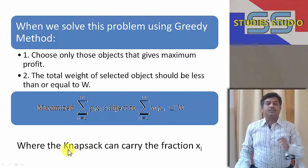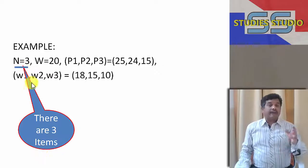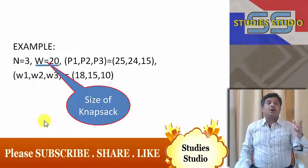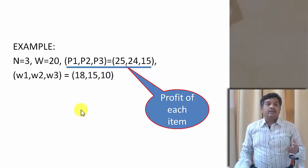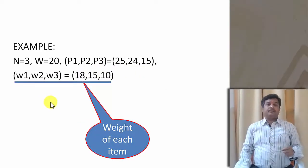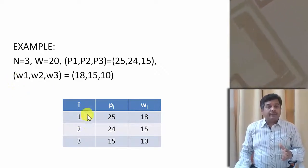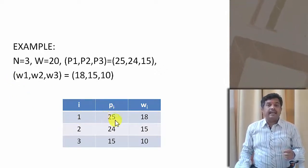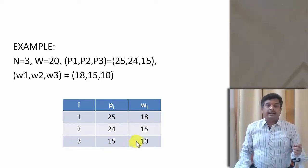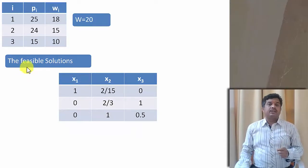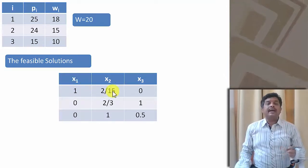Here, we can take a fraction of a particular item. Let me illustrate with an example. Let n be the number of items, W be the size or weight of the knapsack. Profits p1, p2, p3 and weights w1, w2, w3 are given for three items. In tabular form: item 1 has profit 25 and weight 18; item 2 has profit 24 and weight 15; item 3 has profit 15 and weight 10. Consider the feasible solution where x1=1, x2=2/15, x3=0.